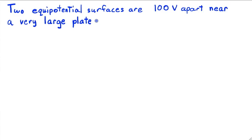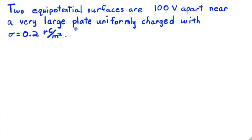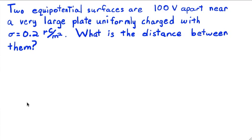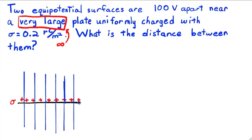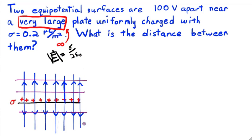Our final problem is a word problem about potential difference. Two equal potential surfaces near a large uniformly charged plate have a 100 volt potential difference between them. We need to figure out what the distance between them is. First of all, very large is code for infinitely large, so we can treat this plate as an infinite plane. The electric field points away from the plate and has constant magnitude given by the usual formula. Equal potential surfaces are perpendicular to electric field lines, so they must be horizontal planes parallel to the charged plate. The potential decreases as we move away from the plate.